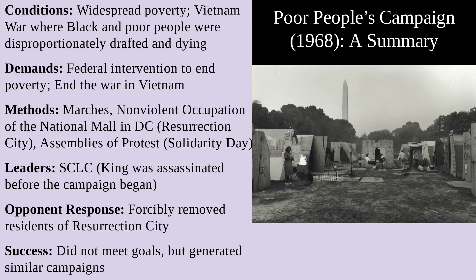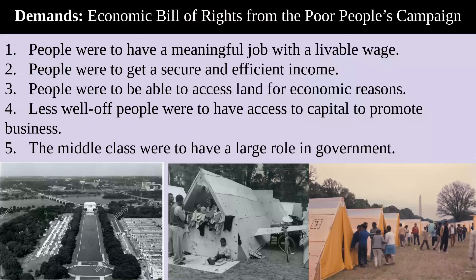Starting really in 1965, King had shifted to a focus on economic justice — housing, jobs, wages. So they demanded an economic bill of rights: people were to have meaningful jobs, a living wage, secure and efficient income, access to land and capital to promote business. That's important, and the middle class having a larger role in government was put in here as well.